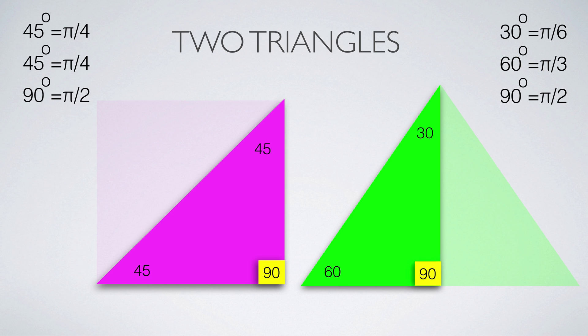It is good to know the values of the trig functions for some values. There are two triangles: the 45-45-90 triangle and the 30-60-90 triangle. The first is half of the unit square; the second is half of the equilateral triangle.